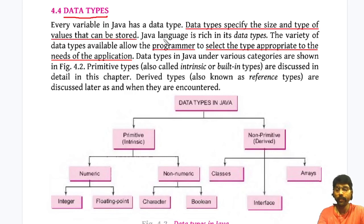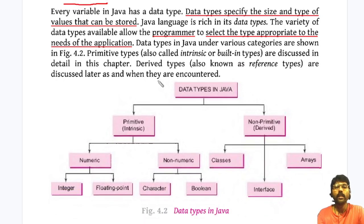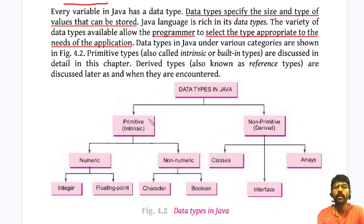The next topic is called data types. In programming, data types specify the size and type of value that we can store — which type of data we are storing and what is the size of that data. Java contains a rich set of data types. It is the programmer's job to select an appropriate data type in the program.